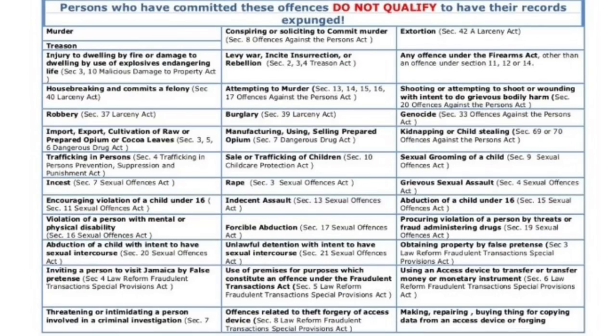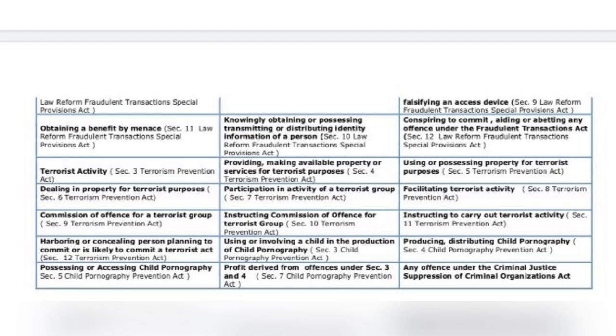You can always expunge minor crimes from your record, but there are some offenses that are too serious to be expunged — things like murder, treason, robbery, and so forth. You may have made a mistake in the past and as a result have a dirty record. Applying for an expungement is a great way to close that chapter and provide you with a clean slate.